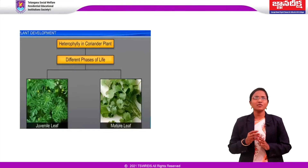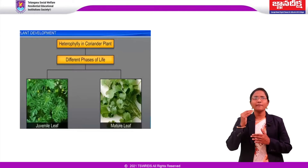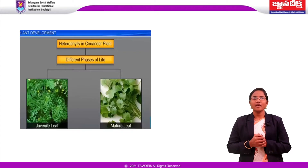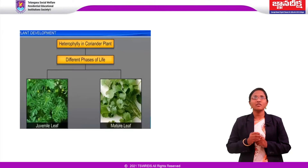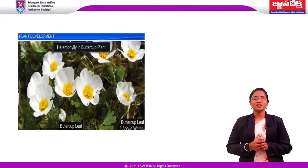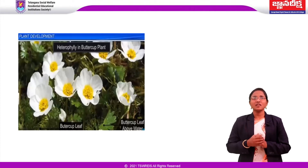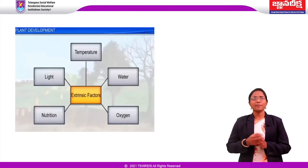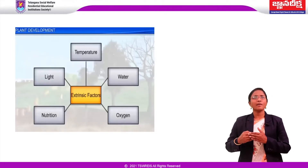Heterophylly can be classified into developmental heterophylly and environmental heterophylly. In developmental heterophylly, different types of leaf shapes are observed in young and mature stages of the plant — for example, cotton and coriander. In environmental heterophylly, leaf shape changes according to the environment — for example, buttercup or Ranunculus. Development in plants is dependent on both extrinsic and intrinsic factors. Intrinsic factors are intracellular such as genetic, or intercellular such as chemical signals.